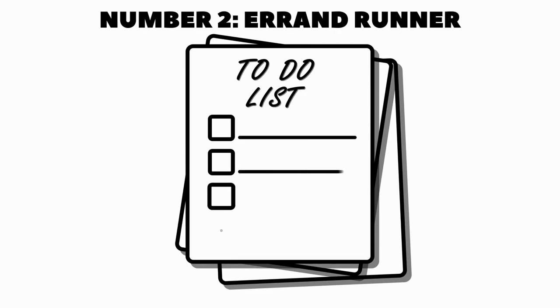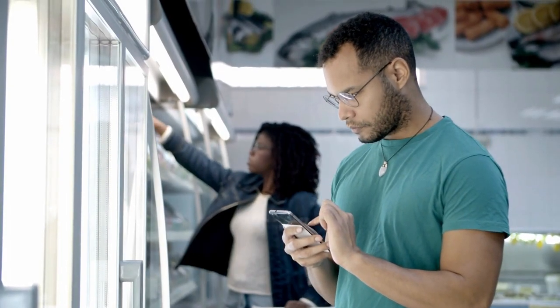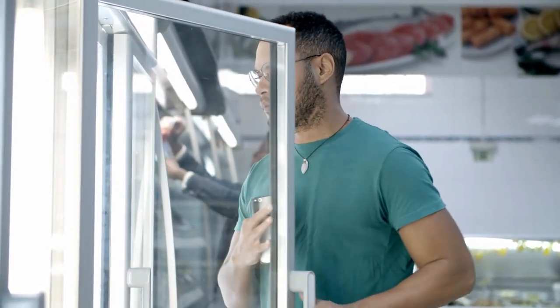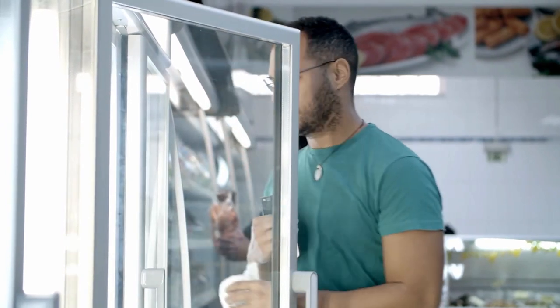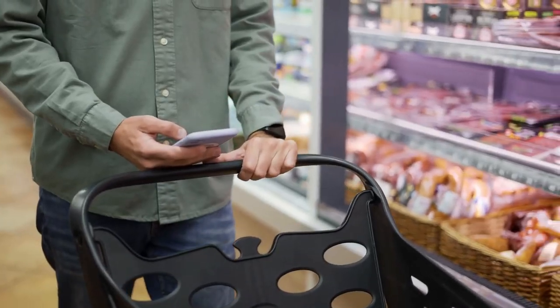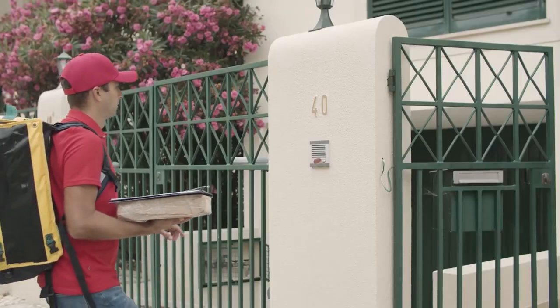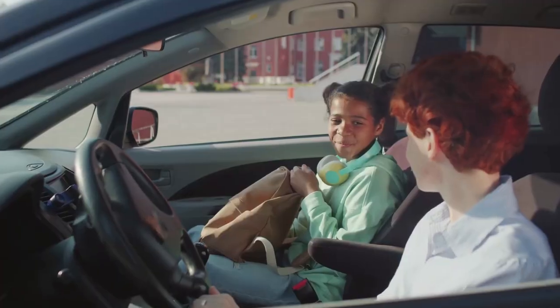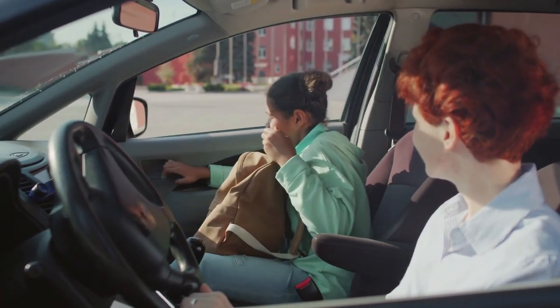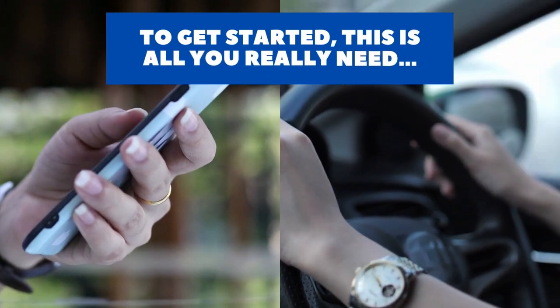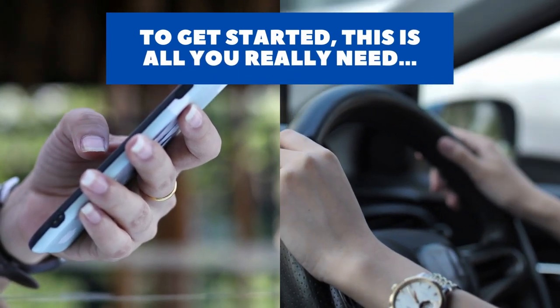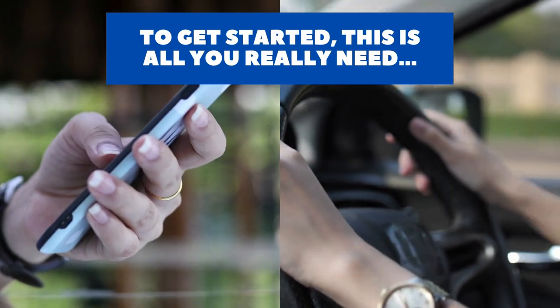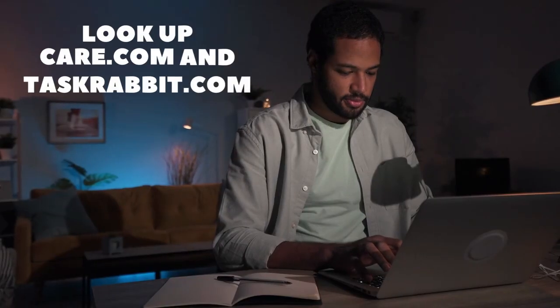Number 2. Errand Runner. Similar to VAs, errand runners perform key day-to-day functions for people who are too busy or otherwise can't perform these functions for themselves. These tasks include grocery shopping, picking up and dropping off items or people, like kids, as well as light housekeeping. The senior citizen market is a big one for errand runners. Getting started is simple. If you have a phone and a reliable way to get around, you can offer your services as an errand runner through a number of platforms, including Care.com and TaskRabbit.com.